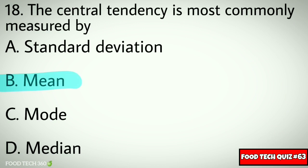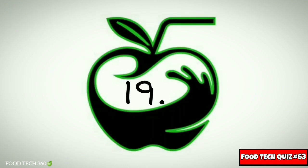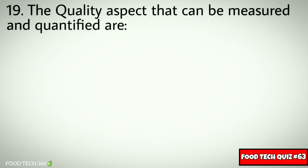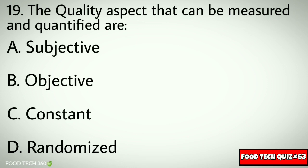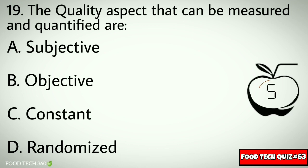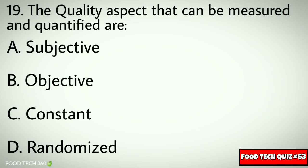Question No. 19. The quality aspects that can be measured and quantified are: Options: A. Subjective, B. Objective, C. Constant, D. Randomized. Correct answer: B. Objective.